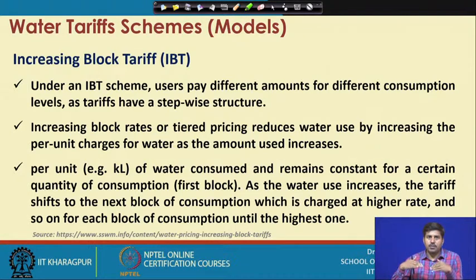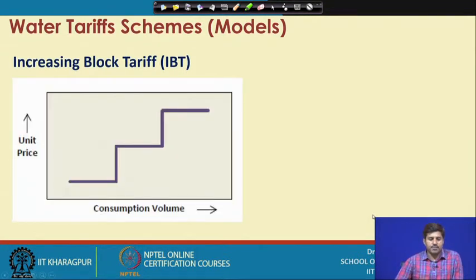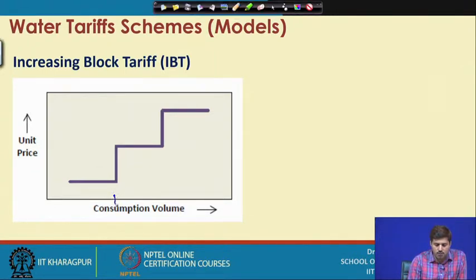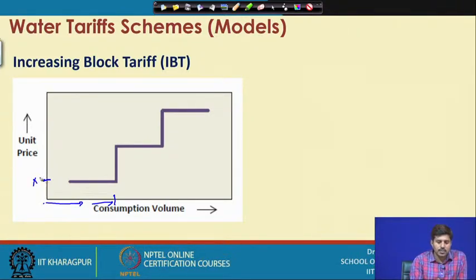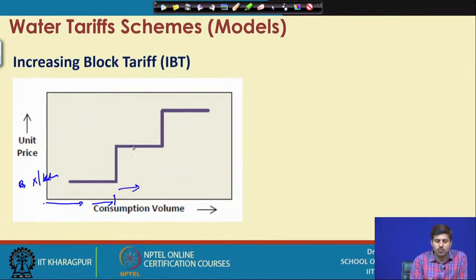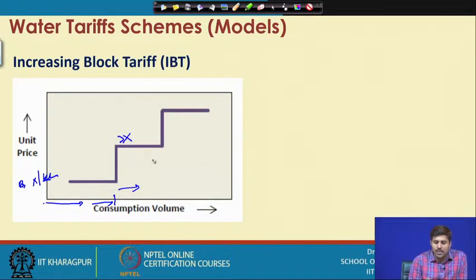This particular tariff has a stepwise structure. For a low consumption volume — say up to a certain amount — the customer is charged at a certain value, let us say X rupees per kiloliter. But if consumption increases beyond this point, the rest of the consumption is going to be charged at a much higher value, greater than X.